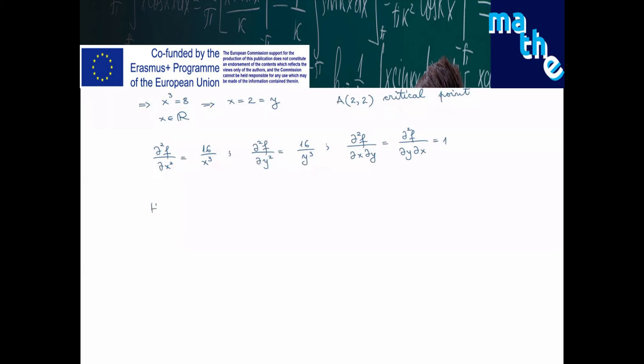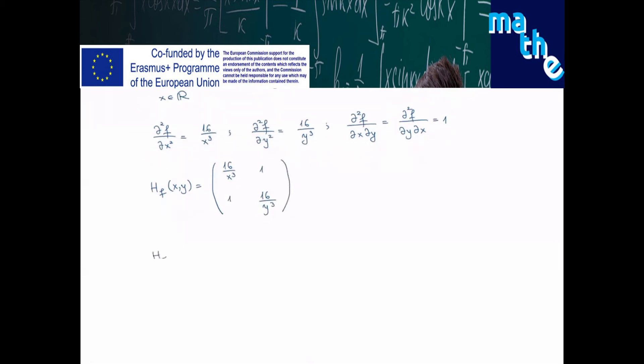So the Hessian of f at an arbitrary point x is 16 over x to the power 3, 1, 1, 16 over y to the power 3. Computing the Hessian at the point a, we find the matrix with entries 2, 1, 1, 2.